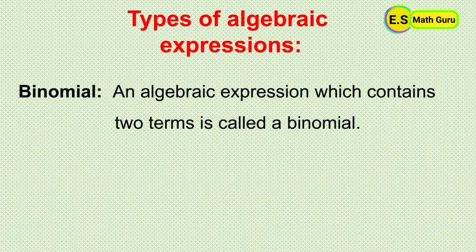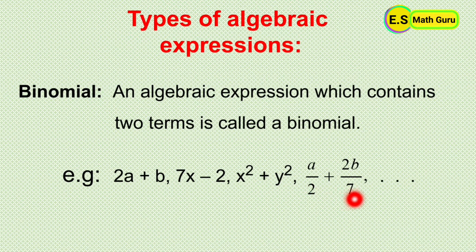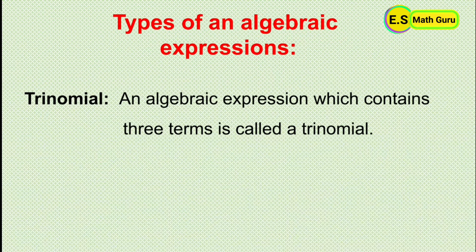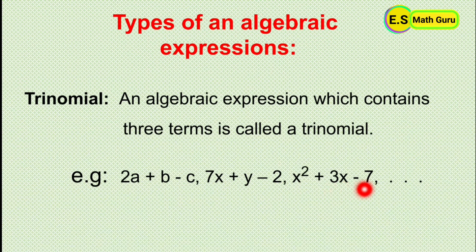Binomial: an algebraic expression which contains two terms is called a binomial. For example, 2a plus b, 7x plus y, minus 2, x squared plus 3x minus 7, and so on.